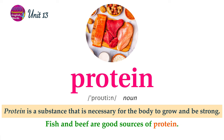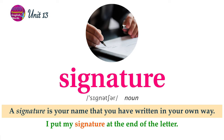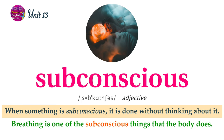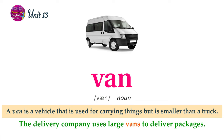When something is nutritious, it helps the body stay healthy. Mangoes are one of the most nutritious fruits in the world. Protein is a substance that is necessary for the body to grow and be strong. Fish and beef are good sources of protein. A signature is your name that you have written in your own way. I put my signature at the end of the letter. Stuff is a word used to refer to things without mentioning the things by name. We gave a lot of stuff to the charity. When something is subconscious, it is done without thinking about it. Breathing is one of the subconscious things that the body does. A van is a vehicle that is used for carrying things but is smaller than a truck. The delivery company uses large vans to deliver packages.